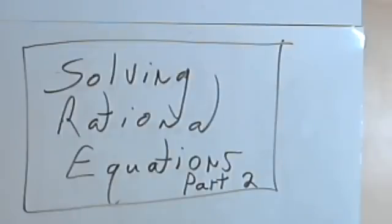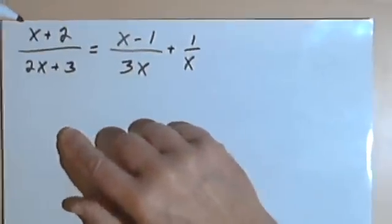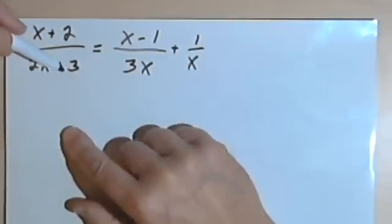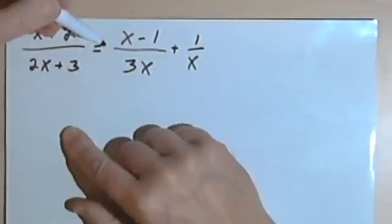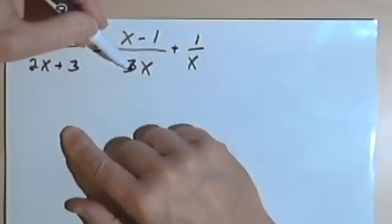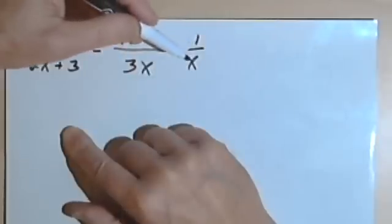This is going to be the second video about solving rational equations. I just want to do one more example to make sure that we're comfortable with it. So here I've got the equation: x plus 2 over 2x plus 3, equals x minus 1 over 3x, plus 1 over x.